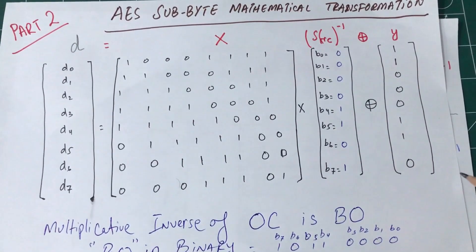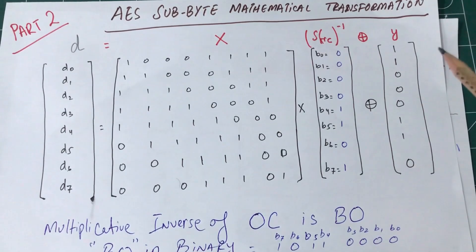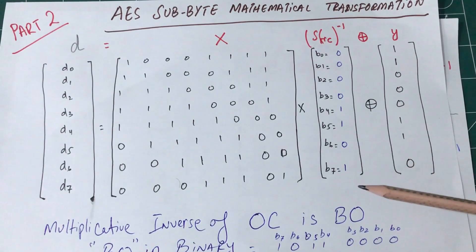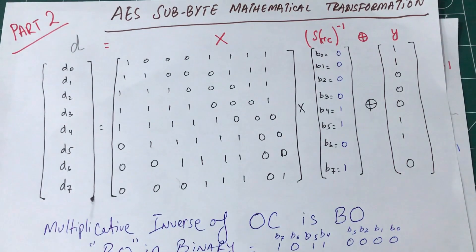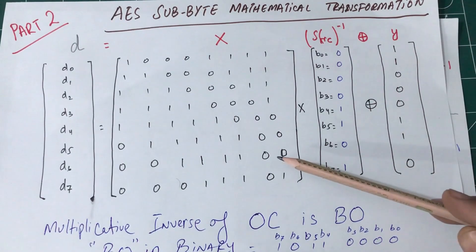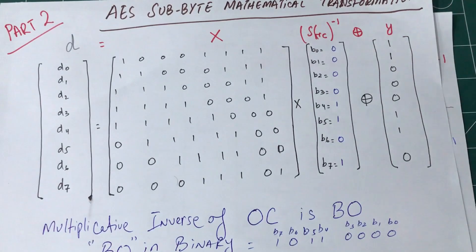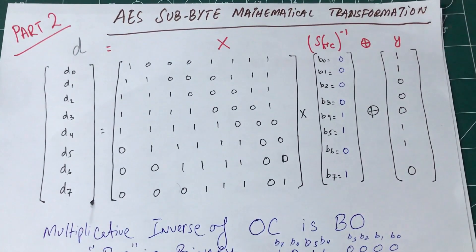Let's continue with AES SubByte. We were calculating AES SubByte using the mathematical definition. Normally we can do it with a table, but we're taking a different approach — calculating this using the multiplicative inverse, multiplying it by a matrix, and then XORing it with a different matrix.